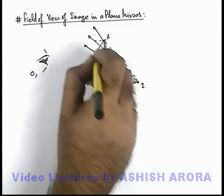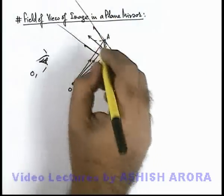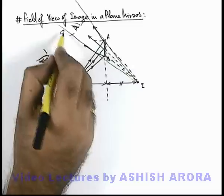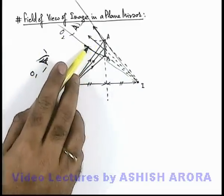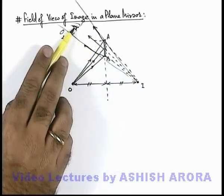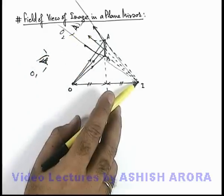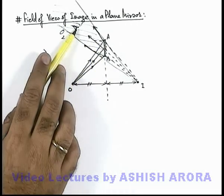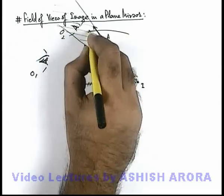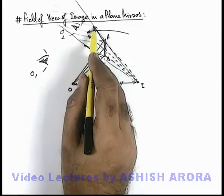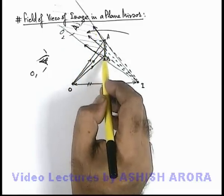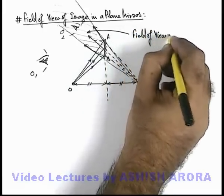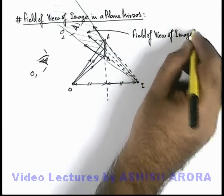But certainly, in between the edges — or in between the light rays which are reflected from the edges of the mirror — if an observer is located, like observer O2, then the light rays within this region will be incident on the eye aperture and it will appear that all rays are coming from point I. So this is the region in which, wherever an observer is located, they will be able to see the image. This shaded zone, bounded by the light rays reflected from the edges of the mirror, can be called the field of view of the image in this plane mirror.